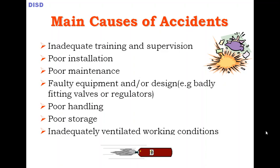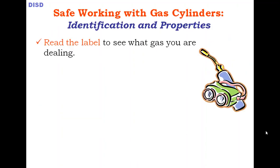Now let's talk about the safety law and rules — specifically, how to identify particular gases. Manufacturers are required to label all cylinders with the gas properties, safety precautions, contact number, and expiry date. All details must be shown on the label. This is the law: manufacturers must display all documents and details on the cylinder. Read the label very carefully to know what you are dealing with.